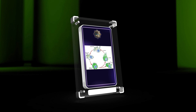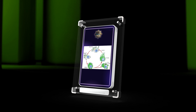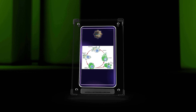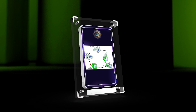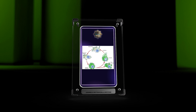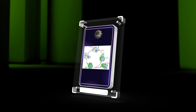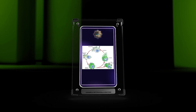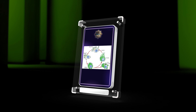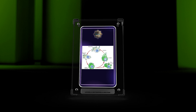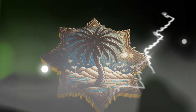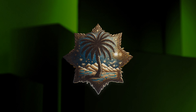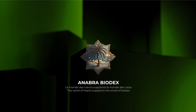Tularemia is a zoonotic disease, highlighting the importance of a One Health approach to its management and prevention. This section will emphasize the need for collaboration between veterinary and human health sectors in combating F. tularensis. We will explore the role of wildlife surveillance, vector control, and interdisciplinary research in minimizing the risk of zoonotic transmission, and discuss the impact of climate change, land use, and population dynamics on tularemia epidemiology.